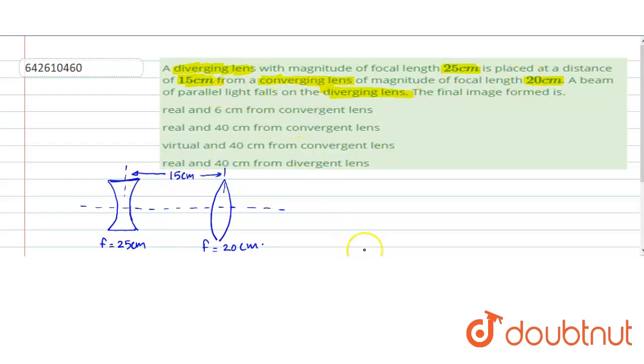So we have to find the position and the nature of the final image. So this is how light beams are falling. Now we have to find the position and the nature of the final image.